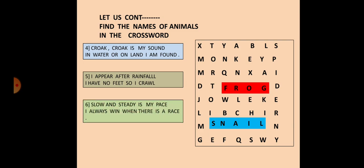Sixth one: slow and steady is my pace, I always win when there is a race. The answer here is the tortoise. Okay. I hope you have got these answers. Please do it in your book.